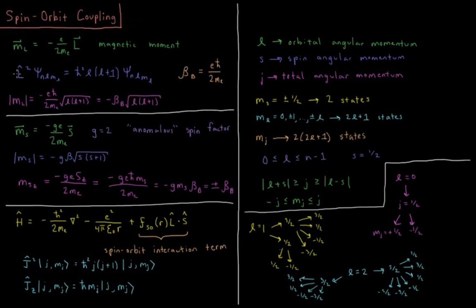We have the orbital angular momentum squared operator, L squared, acting on ψ_nLm_L, where m_L is noted because we will have spin angular momentum as well. That equals ħ² L(L+1) times ψ_nLm_L, so ψ are our atomic orbitals — eigenfunctions of L² with eigenvalue ħ² L(L+1). The absolute value of this angular momentum vector is thus the square root of that, giving a magnetic moment of −eħ over 2m_e times √(L(L+1)).